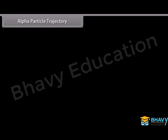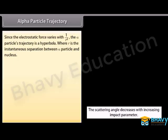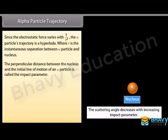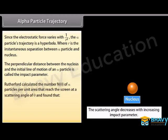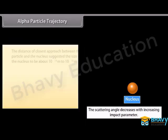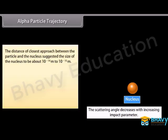Alpha particle trajectory: Since the electrostatic force varies as 1/r², the alpha particle's trajectory is hyperbolic, where r is the instantaneous separation between the alpha particle and nucleus. The perpendicular distance between the nucleus and the initial line of motion of an alpha particle is called the impact parameter. Rutherford calculated that N(θ) is inversely proportional to sin⁴(θ/2). The distance of closest approach suggested the size of the nucleus to be about 10⁻¹⁴ to 10⁻¹⁵ meters.